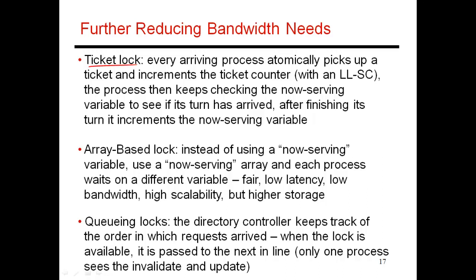The ticket lock is very similar to showing up at a DMV and picking up a token that tells you when your turn is going to show up. There are two variables: the 'now waiting' variable and the 'now serving' variable. When a thread shows up, maybe this has a value of 63 saying that my turn is number 63, and the thread currently being served is perhaps thread number 55.